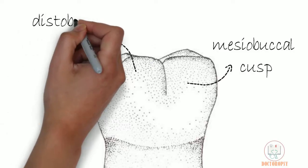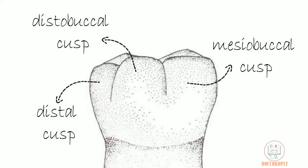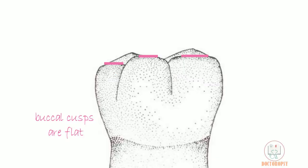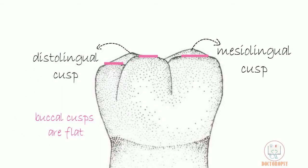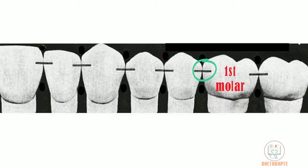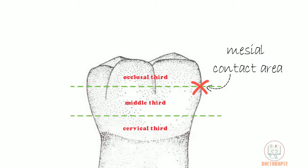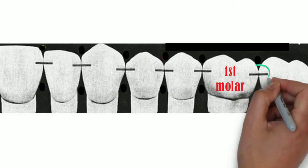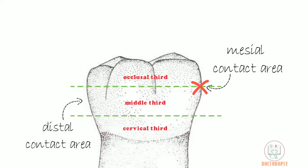The mesiobuccal cusp, distobuccal cusp, and the distal cusp are in the front. Among these, the mesiobuccal cusp is the widest and the distal cusp is the smallest. All of these cusps are relatively flat, due to which the tips of the mesiolingual cusp and distolingual cusp are also visible. The mesial contact area, by which it contacts the 2nd premolar, is at the junction of the occlusal third and middle third, whereas the distal contact area, by which it contacts the 2nd molar, is at the middle third.